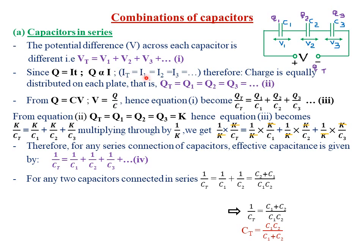For resistors, under current electricity 2, we said that I total — the total current entering a junction — is equal to the current across each component connected in series. Therefore, the way current was behaving for resistors is the same way that charge will be behaving for the capacitors. Because from Q equals IT, if you hold time constant, then charge Q will be directly proportional to current. So just like I total equals I1 equals I2 equals I3, now for the capacitors, Q total must equal Q1 must equal Q2 must equal Q3.